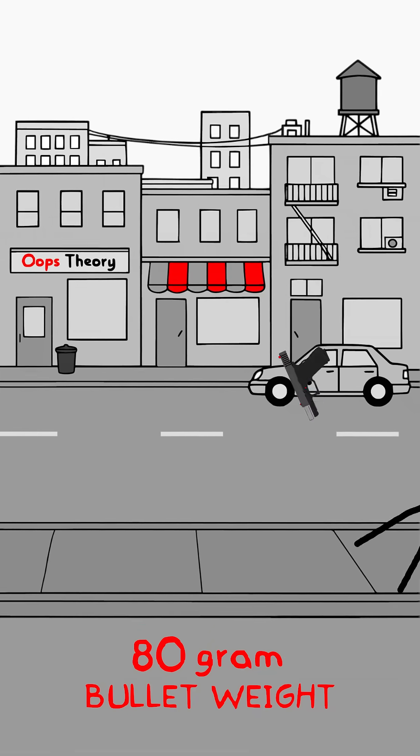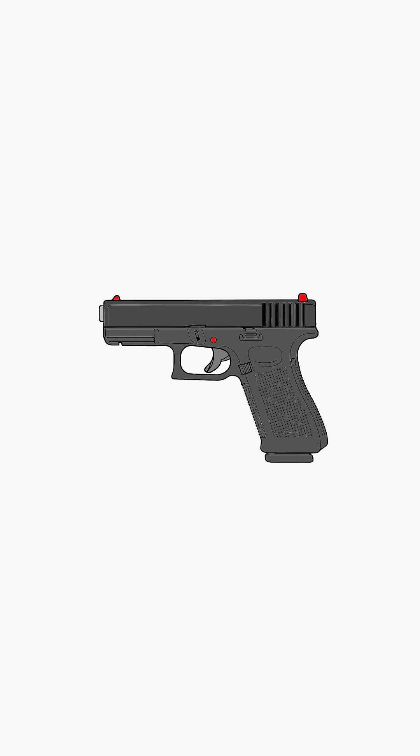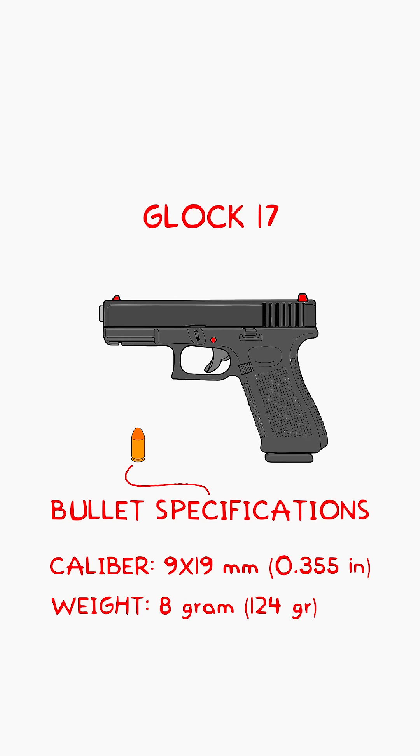What if a pistol bullet were 10 times heavier? Let's take the popular Glock 17. The parameters of its standard bullet, 9x19 caliber, it weighs 8 grams and travels at 380 meters per second.